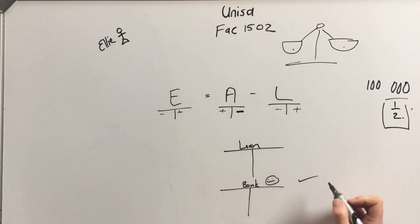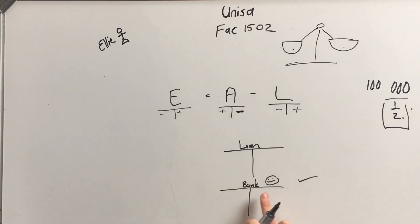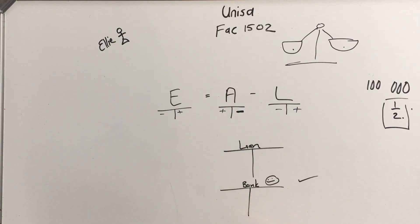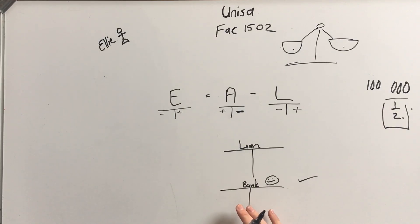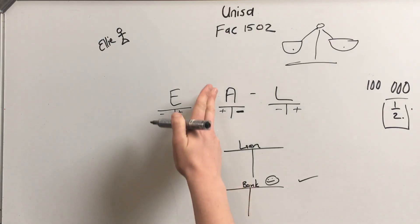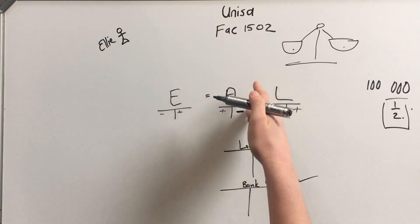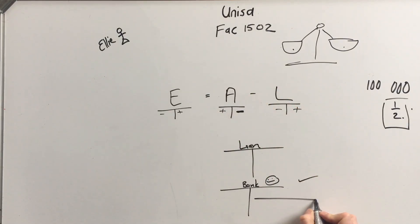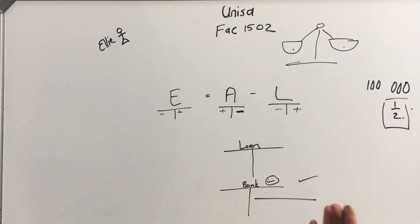Start with bank — it helps us think. When we repay a loan, we take money out of our bank account, so our bank balance goes down. Bank is an asset, and an asset goes down on the right-hand side, so we're writing on the credit side for bank.